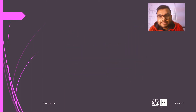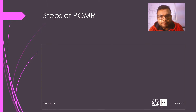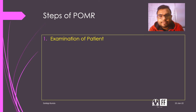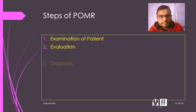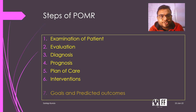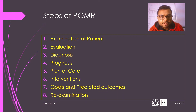Now we will see what are the steps of POMR. The first is the examination of the patient, then comes evaluation, then the diagnosis part, then prognosis, plan of care, interventions, goals and predicted outcomes, and lastly re-examination. We will discuss these steps one by one.